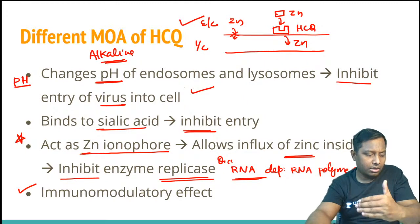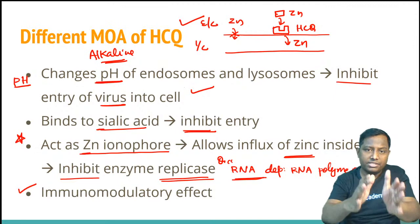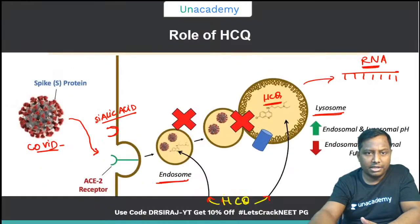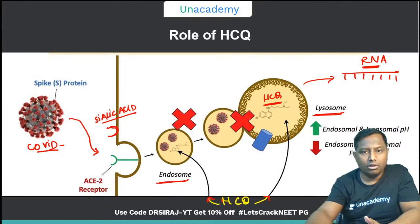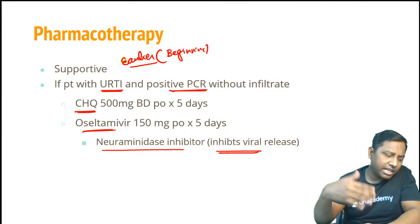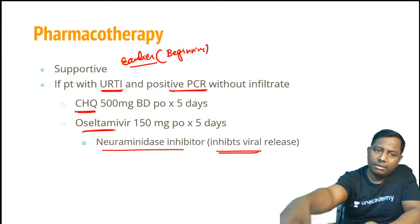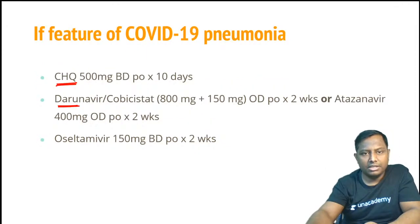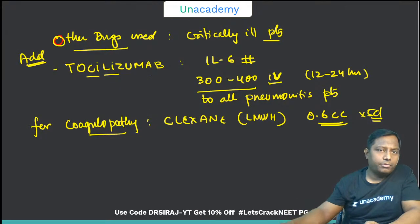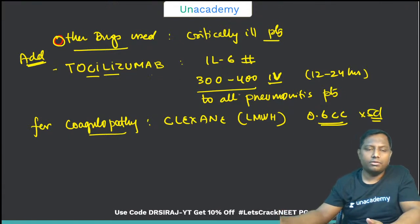In pregnancy, this will be dealt with by the gynecology faculty. If the patient is serious and not responding to drugs, it is usually advised to terminate the pregnancy. In pediatrics, the same drugs are used but doses are reduced on a per kilogram basis. Tocilizumab, the IL-6 antagonist, is used for pneumonitis and ICU patients. For coagulopathy, low molecular weight heparin — CLAXAN — is also used.